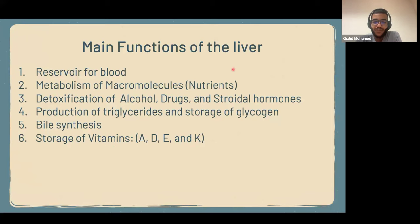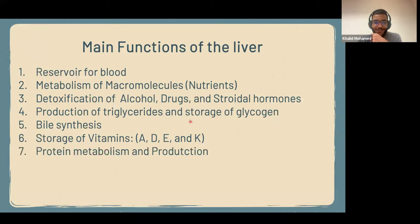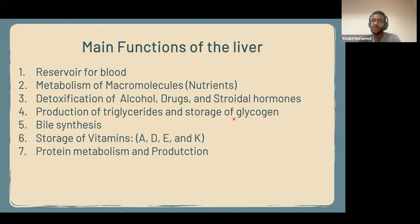If the liver is not functioning well, you won't have stores of any of these vitamins and that's going to cause many problems. Another function is protein metabolism and production. Most of the proteins in the body are produced in the liver, like albumin, which is very important in controlling the hydrostatic pressure and osmolality of the plasma and blood. The clotting factors are also produced in the liver, so if the liver is not functioning well, you'll have many bleeding disorders.